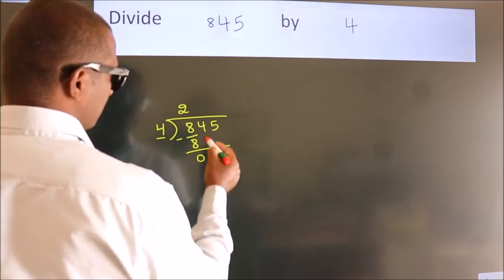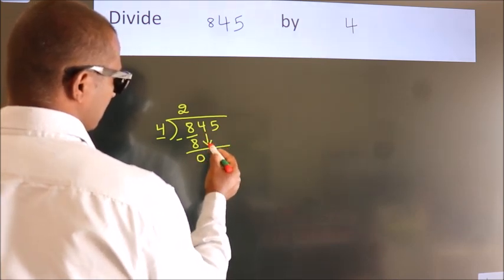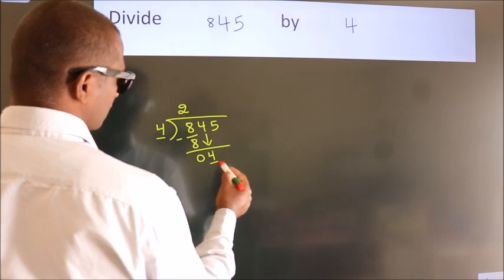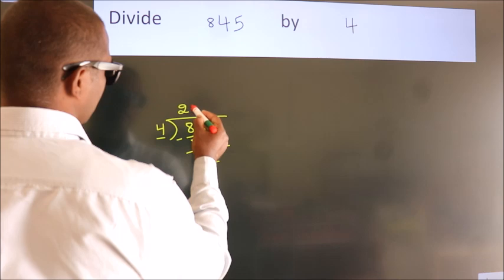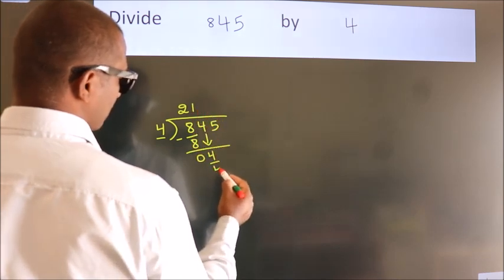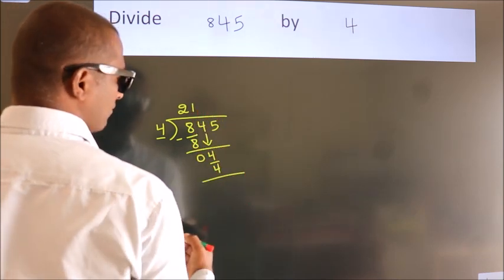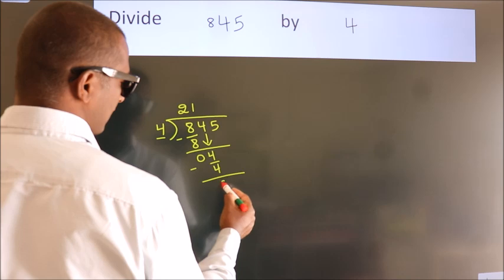After this, bring down the beside number. So 4 down. So 4. When do we get 4? In 4 table. 4 1's 4. Now we subtract. We get 0.